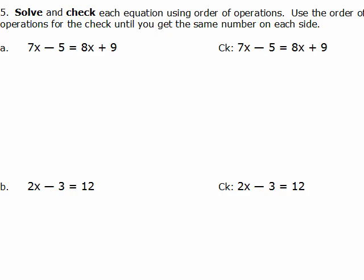Solving and checking these equations. On the first one we can subtract 8x from both sides — we're going to put the variables on one side, constants on the other, and at the same time, since the x's are going to be on the left side, I'm going to add 5 to both sides. You can take two steps to do that or one step.